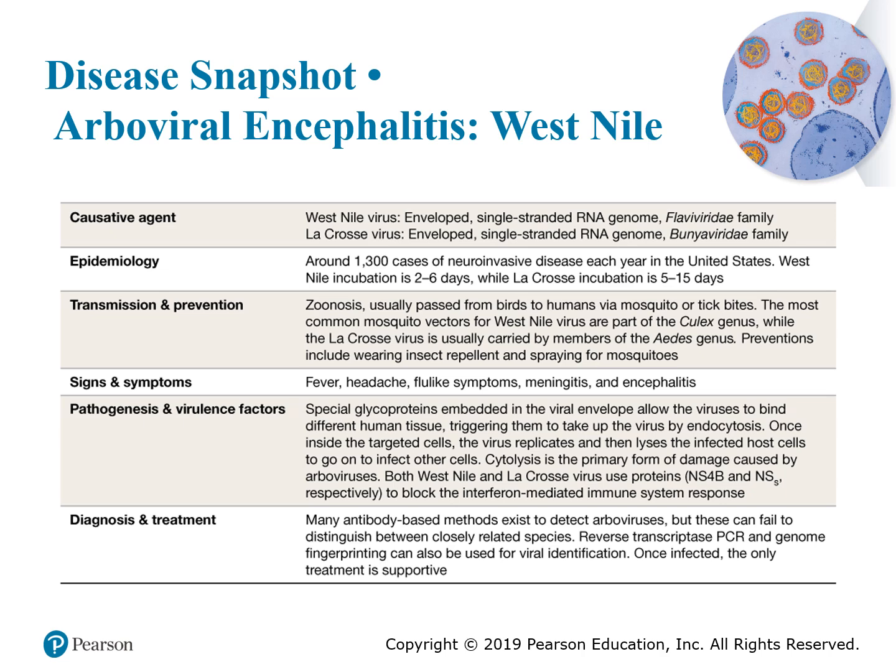West Nile virus is transmitted from birds to humans via mosquito or tick bites. Blood donations are now tested for West Nile virus. Signs and symptoms include fever, headache, flu-like symptoms, meningitis, and encephalitis. Testing is typically done using an antibody-based method as well as PCR testing to detect this organism. Treatment is supportive — you essentially treat the symptoms.